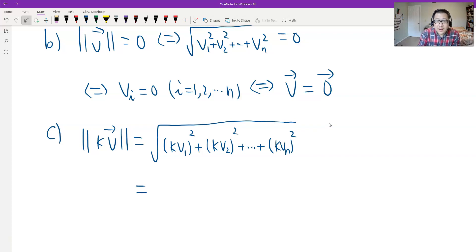I can factor out the K. We can easily factor out the K, put the K together. So we have K squared times V1 squared plus V2 squared plus Vn squared. And then take the K outside of the square root which is absolute value of K. Don't miss the absolute. Sometimes K is negative.